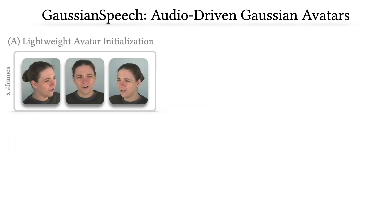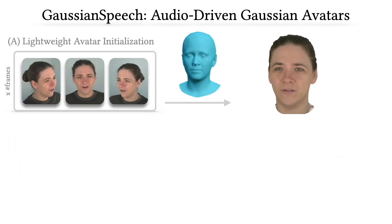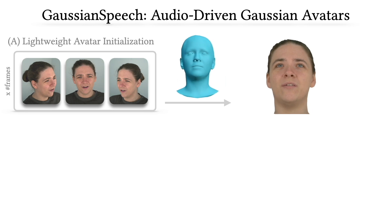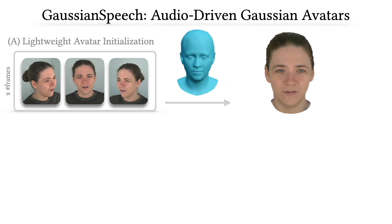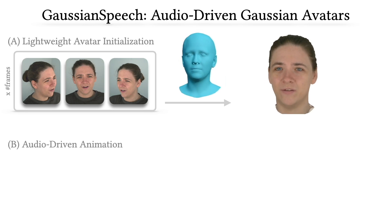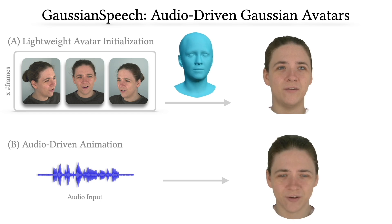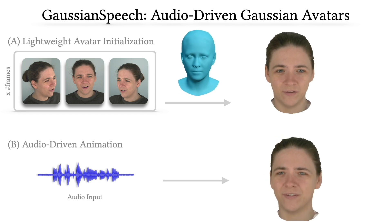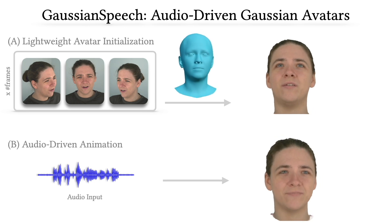To train our method, we first initialize a lightweight 3D avatar based on 3D Gaussian splats. Next, we animate this initialized avatar directly from audio signal by leveraging a transformer-based sequence model.